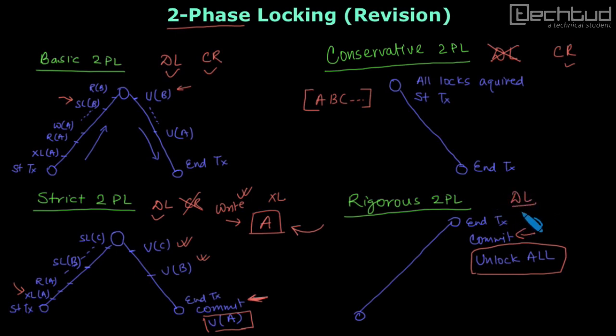Similarly, here also in rigorous 2PL, deadlock will be there. It is there but we take care of cascading rollback. This is all about two-phase locking and now in next lecture, we will solve some example on two-phase locking. See you in the next lecture. Thanks for watching.